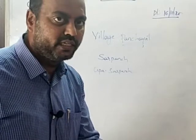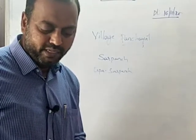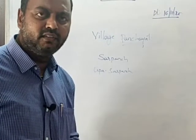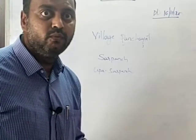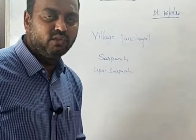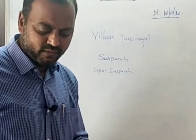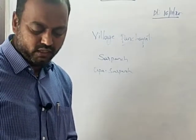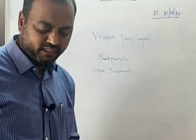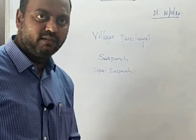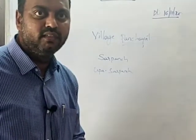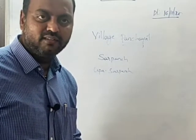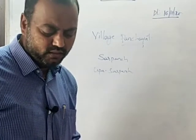More than half the members should be present in order to conduct a panchayat meeting. The meeting usually begins by reading out the proposals or the report of the last meeting — what resolutions were passed, called the minutes of the last meeting. Then the sarpanch has to report about all the work done during the previous month and how much money was spent on them, to all other members in the panchayat meeting.